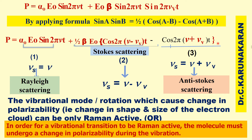There are three terms in this equation. The first term represents Rayleigh scattering. The second term and third term represent Stokes and anti-Stokes scattering respectively. We have already studied in quantum theory what elastic scattering is — due to elastic scattering we get Rayleigh scattering, and due to inelastic scattering we get Stokes and anti-Stokes scattering.